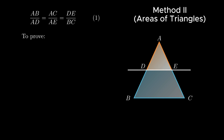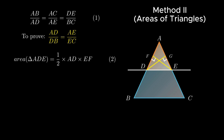Moving further, let's understand another way of proving the same theorem. Under this method, construct EF perpendicular to AD, acting as height for triangle ADE, and DG perpendicular to AE, acting as the second height for the same triangle ADE. Now, area of triangle ADE equals half times AD into EF. Also the area of the same triangle can be calculated using the second height.